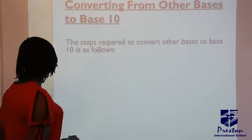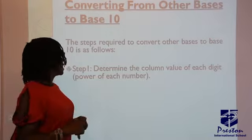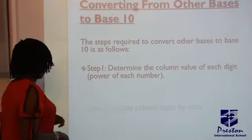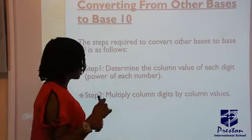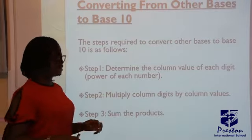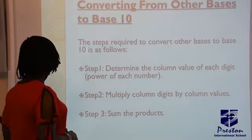So to do this, there are a few steps to it. Number one, you determine the column value of each digit, that is placing a power on each digit given to you. Next step, you multiply the column value with the column digit, and then you sum the products together.